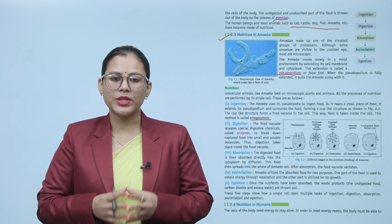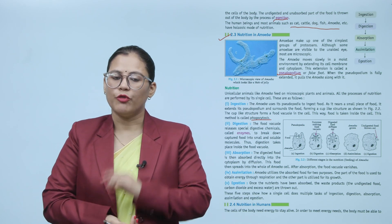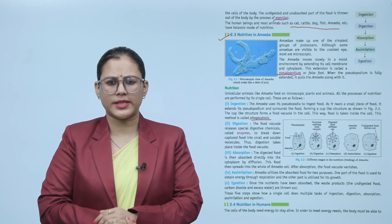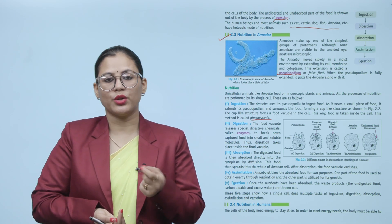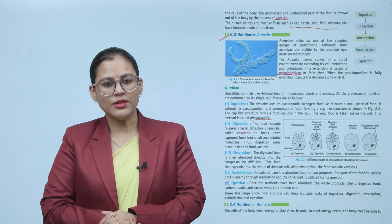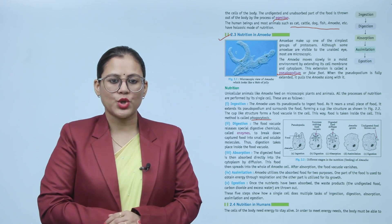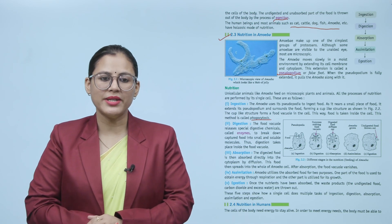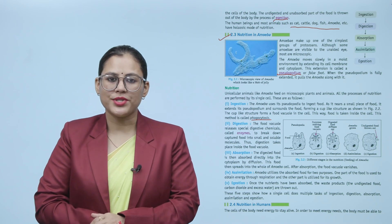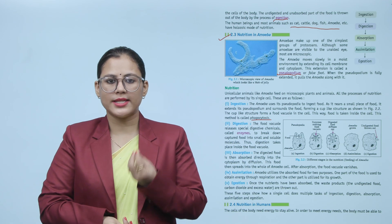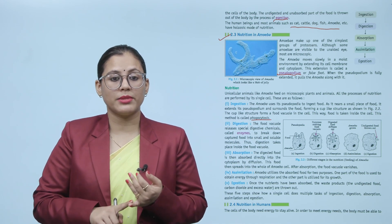Number four: Assimilation. Amoeba utilizes the absorbed food for two purposes — one part of the food is used to obtain energy through respiration, and the other part is utilized for its growth. Number five: Ejection. Once the nutrients have been absorbed, the waste products — undigested food, carbon dioxide and excess water — are thrown out of the body. These five steps show how a single cell performs multiple tasks of ingestion, digestion, absorption, assimilation and egestion.